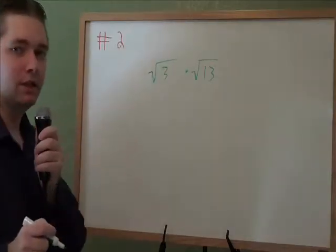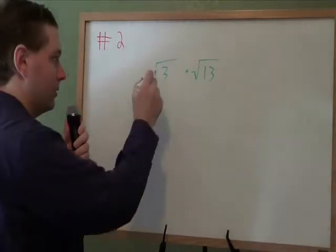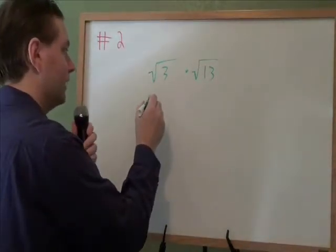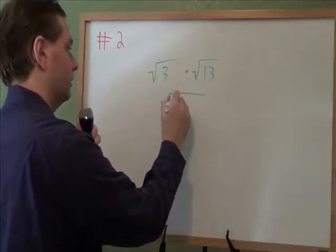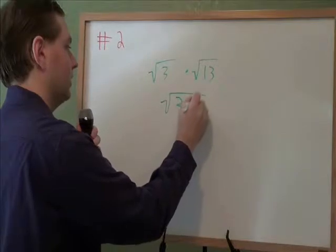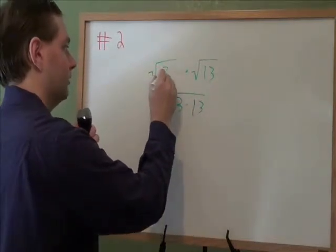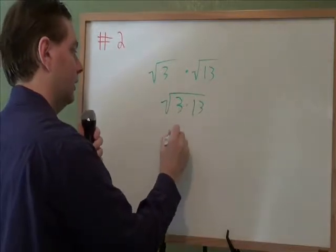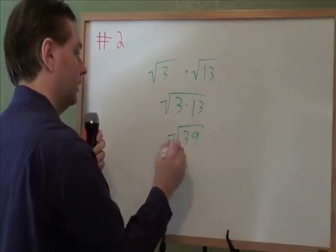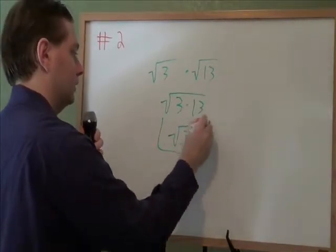Square root of 3 times square root of 13. For this problem, we have to remember one of our square root rules, which is when you are multiplying two different square roots, you can combine them and just multiply on the inside. Square root of 3 times square root of 13 is square root of 3 times 13, which is 39. And that is our answer.